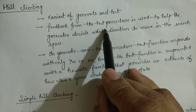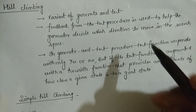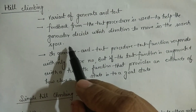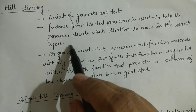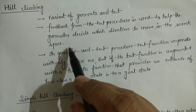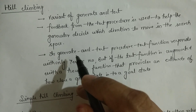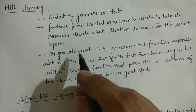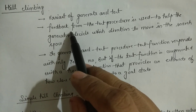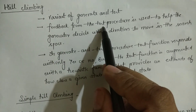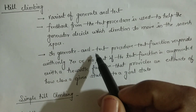In this, we use the feedback of the test procedure, so that the generator — the next state it will generate — it will be easy to decide which direction we will move. We just take the feedback from the test procedure and then move in the appropriate direction.